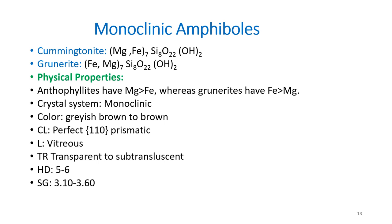The crystal system is monoclinic. Color is brownish, grayish brown, or sometimes brown. Cleavage is perfect 110 prismatic cleavage. Luster is vitreous, and diaphaneity is transparent to sub-translucent. Hardness is 5 to 6, and specific gravity is about 3.1 to 3.6.